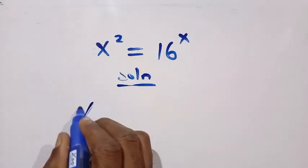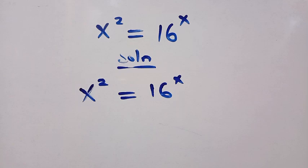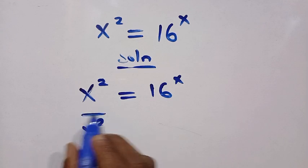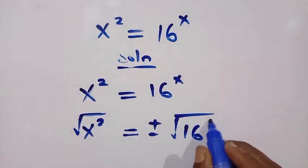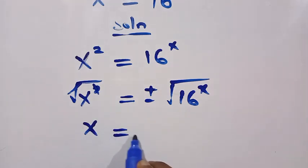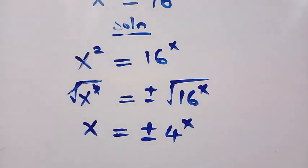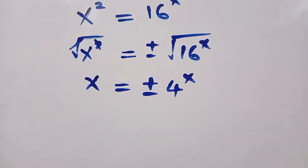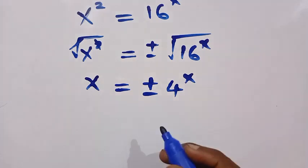From the given equation, x² = 16^x. Taking the square root of both sides, x² under the square root equals plus or minus the square root of 16^x. This simplifies to x equals plus or minus the square root of 16^x, which gives us x equals plus or minus 4 to the power of x.